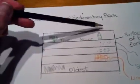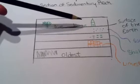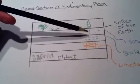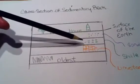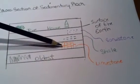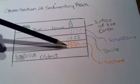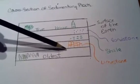So this is the surface of the earth right here. Then the dots represent sandstone. The dashes represent shale. And the little squares here represent limestone.